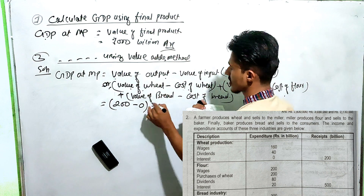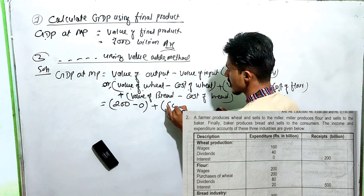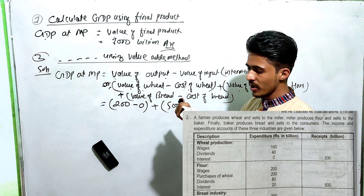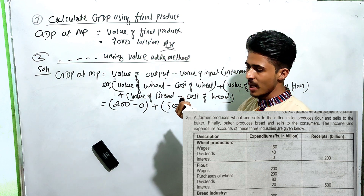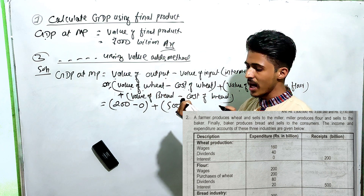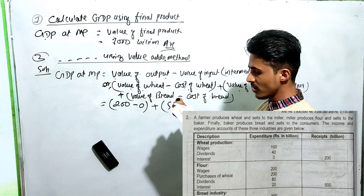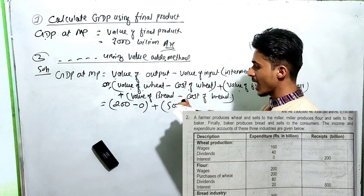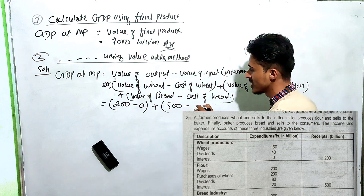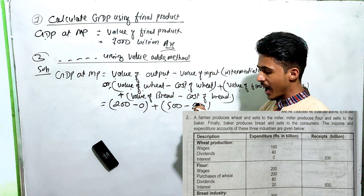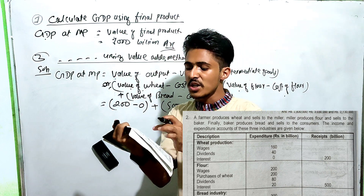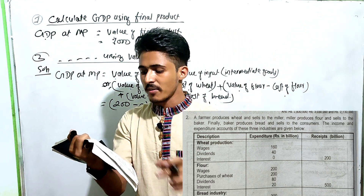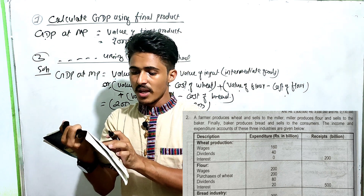On the other hand, the flour is received from wheat production, which involves the miller. The farmer sells to a miller. If we have a miller, the mill processes wheat. The farmer's receipt goes as input to the miller, and the miller's output goes to the bread industry as input.